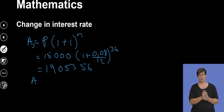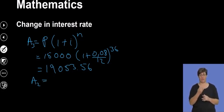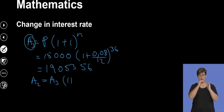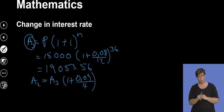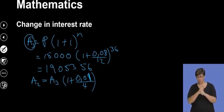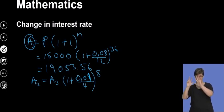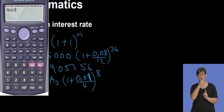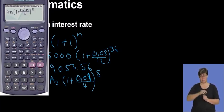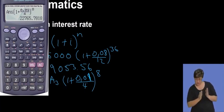For the last two years, the principal is now the amount from t3, which is A3. So A = A3 × (1 + 0.09/4)^8. On the calculator: using the previous answer × (1 + 0.09 ÷ 4)^8 — because two years means eight quarters — gives us the final amount Sbuseso will have at the end of five years.